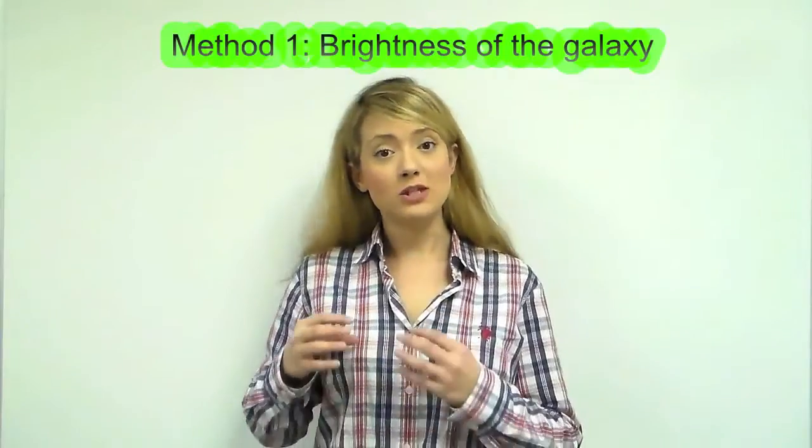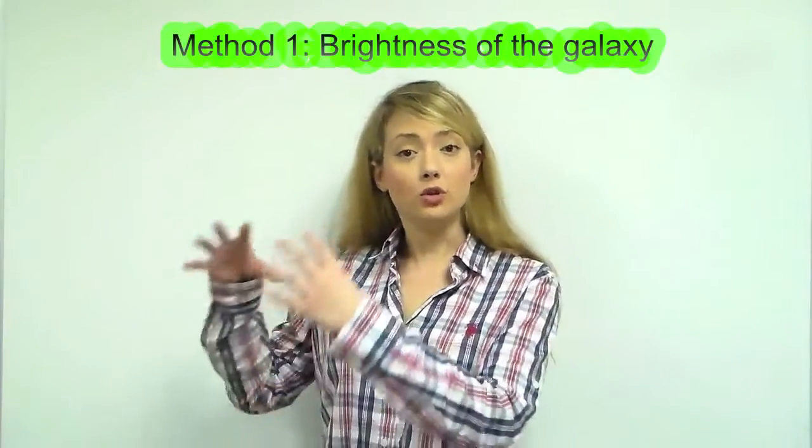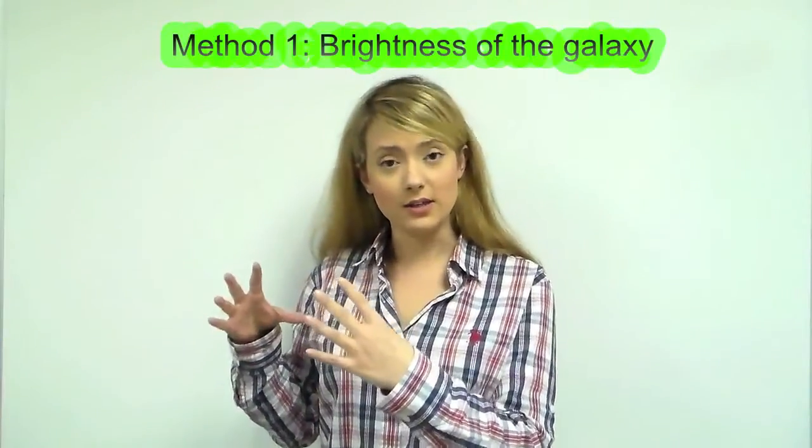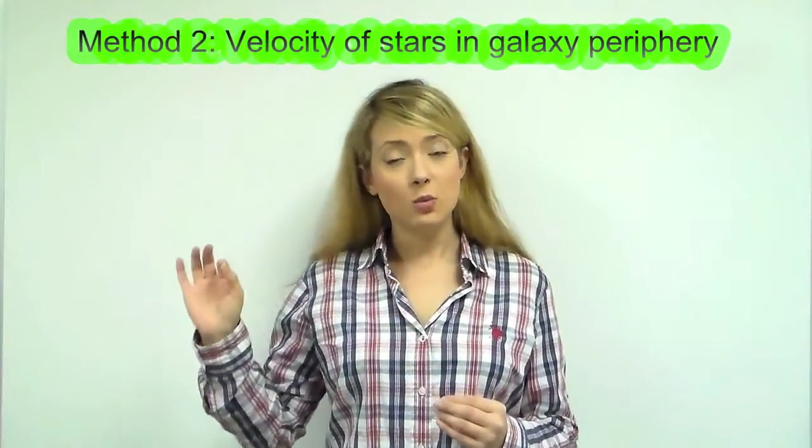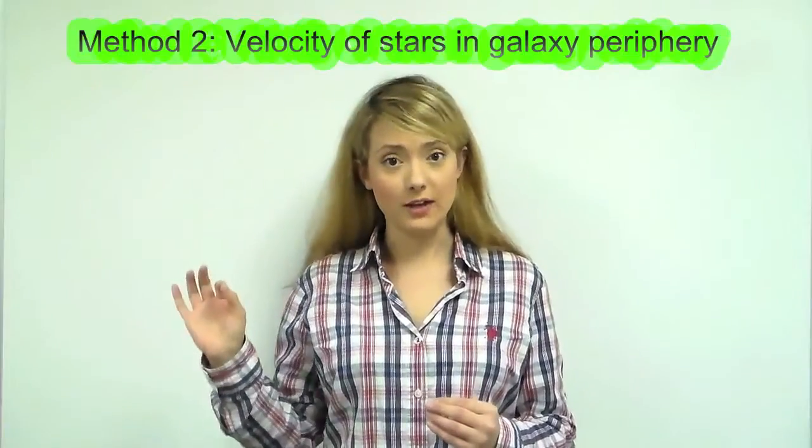You can either infer the mass of the galaxy by looking at the total brightness of the entire galaxy, or you can measure the velocity of stars, especially the ones located at the periphery of the galaxy.